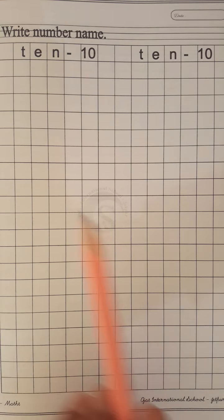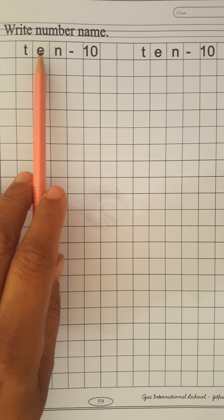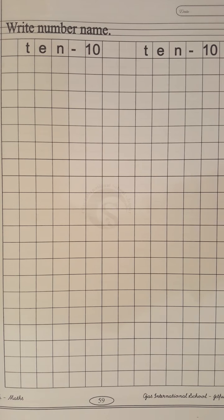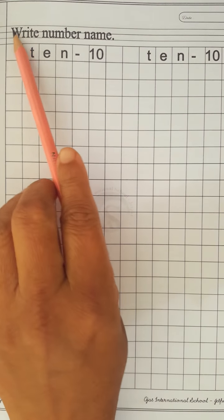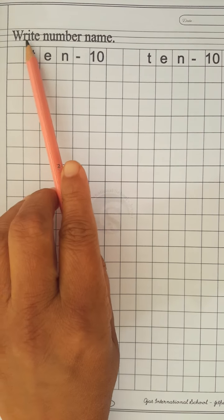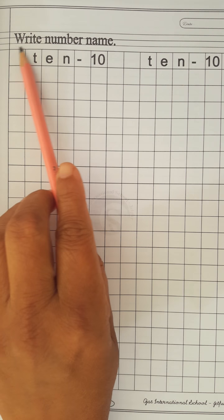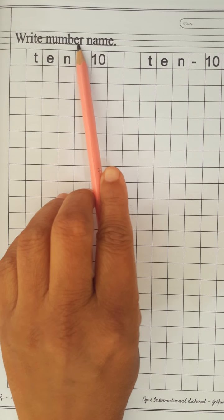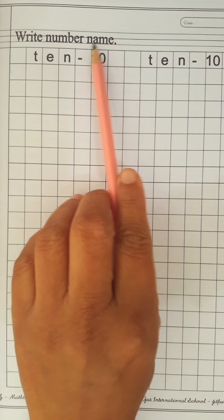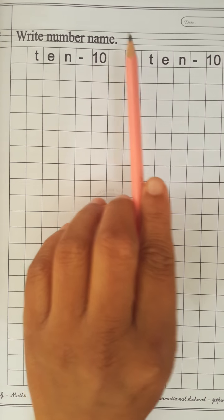Now, let's write number name of 10 in our math book. Read here first. W-R-I-T-E. Write N-U-M-B-E-R. Number N-A-M-E. Name. Write number name.